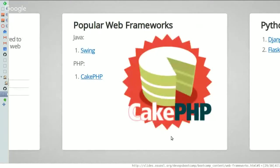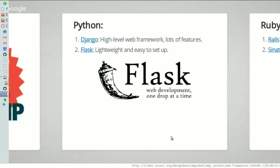There are a lot of frameworks for everything from game development to web frameworks. Specifically for web frameworks, there are some really popular ones. On the Java end, there's something called Swing; if you've ever programmed with PHP there's something called CakePHP. On the Python side — I prefer Python so I can talk about these extensively — we have Django, which is a very high-level framework with a lot of features. When you build a website it gives you an admin interface and makes assumptions like you will have accounts and users.